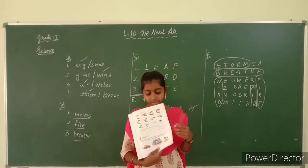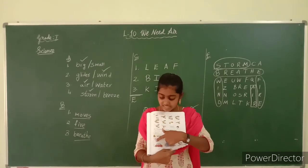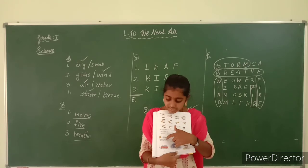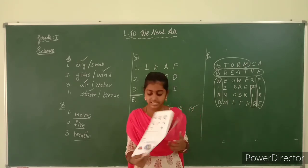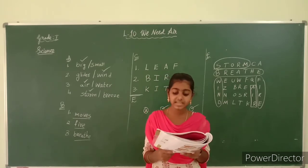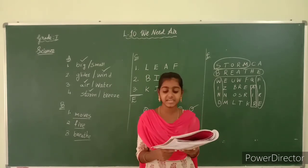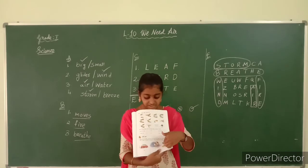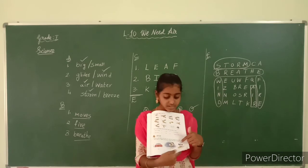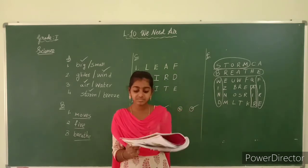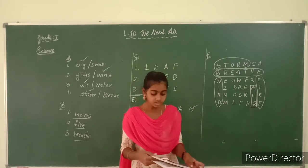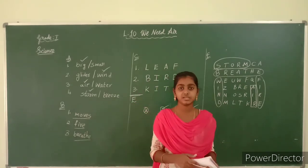Do exercise K as your homework, children. Dirty air can make us fall sick. We must try to keep the air clean. Put a cross against the pictures which make the air dirty — three pictures are given that make air dirty. Cross them and tick the things that keep air clean. Let us continue the remaining lesson in the next class.